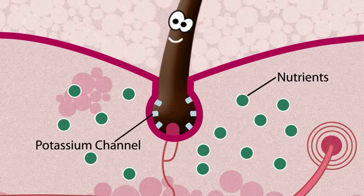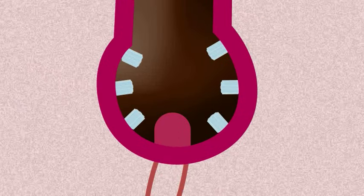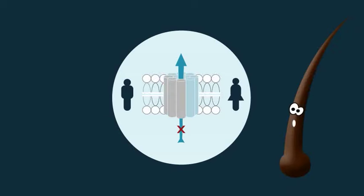Potassium channels are small proteins found within hair follicles that regulate the transport of nutrients across the membrane. Unfortunately, men and women suffering from hair loss have potassium channels that became rusty and don't work properly anymore, leading to dysfunctional hair follicles and thinning hair.